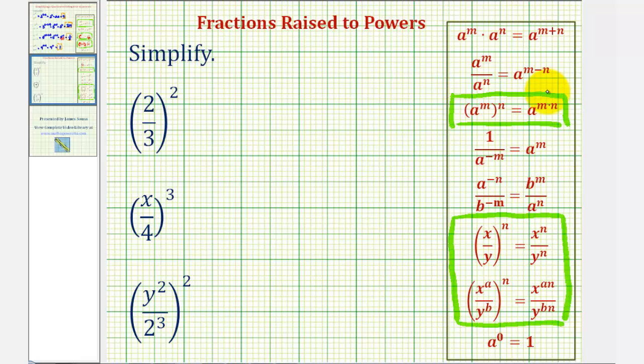So looking at our first example, we have two-thirds raised to the second power. So if it's helpful, we could think of this as two to the first divided by three to the first. And since we have powers to powers, we would multiply the exponents. So we'd have two to the power of one times two is two over three to the power of one times two, or two.